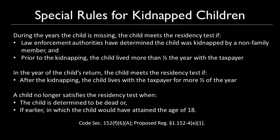There are special rules for kidnapped children. The child satisfies the residency test of being a qualifying child for all years ending during the period in which the child is missing, if the taxpayer's child is presumed by law enforcement authorities to have been kidnapped by someone who is not a member of the family, and the child shared the same principal place of abode as the taxpayer for more than one half of the portion of the tax year preceding the kidnapping. The child is also treated as meeting the residency test in the year the child returns. The missing child ceases to satisfy the residency test in the first tax year beginning after the calendar year in which the child is determined to be dead, or in which the child would have attained age 18.